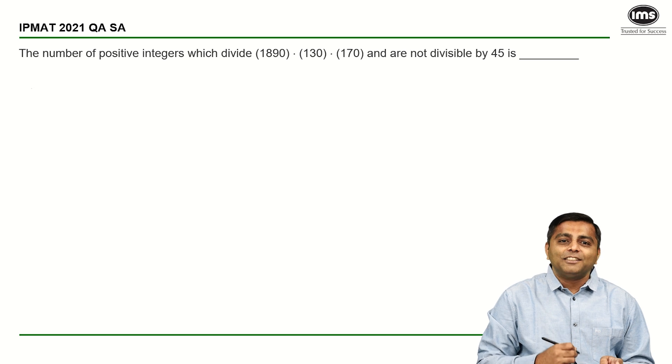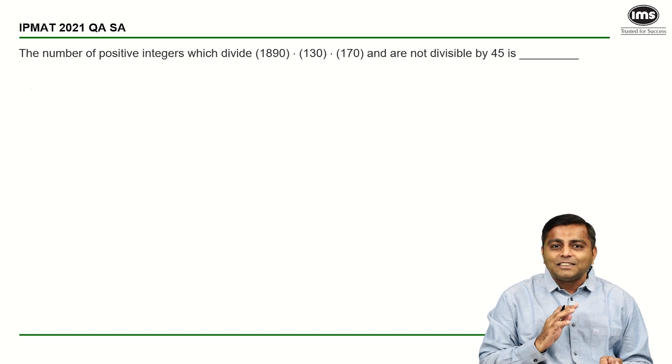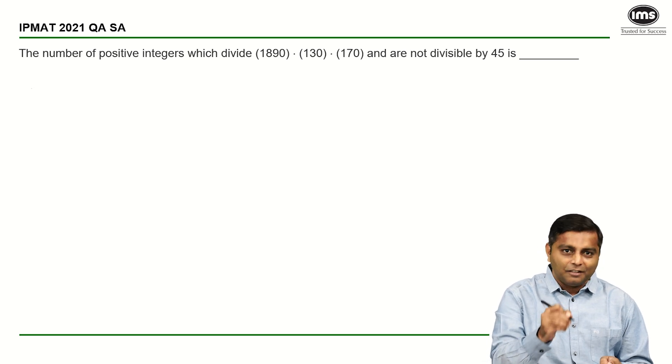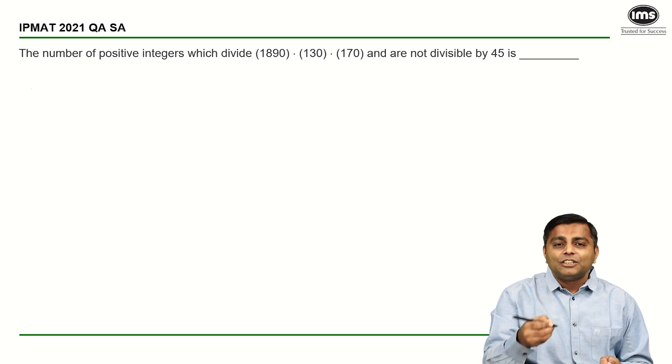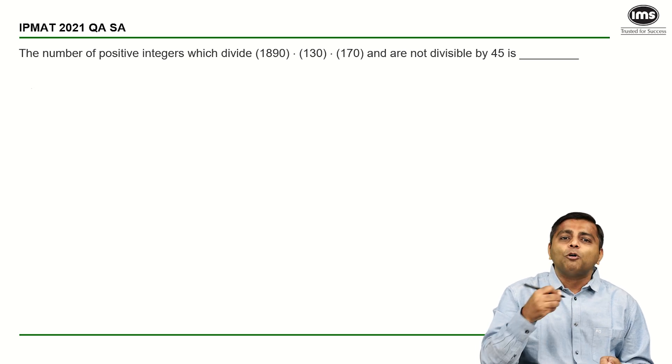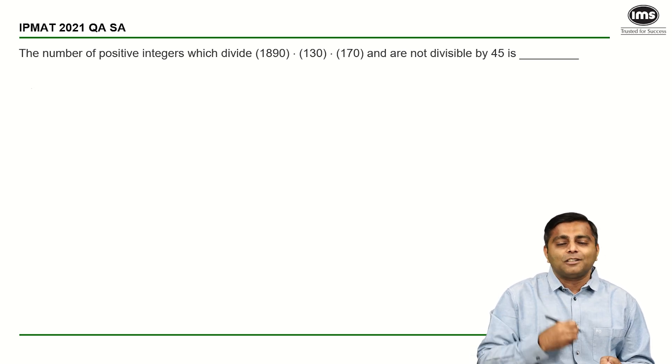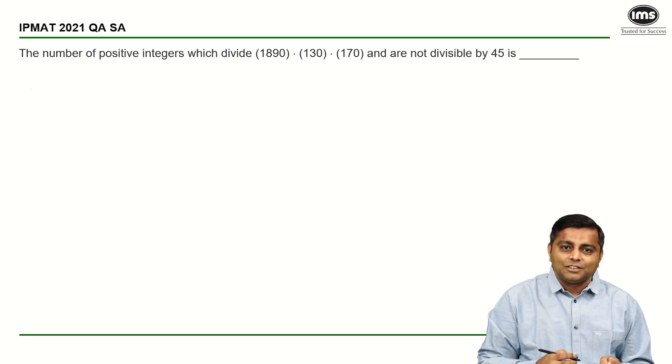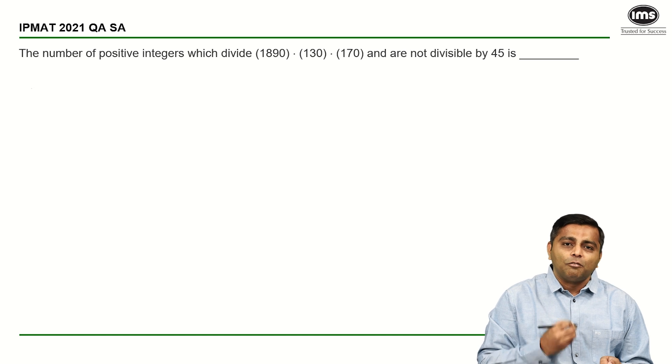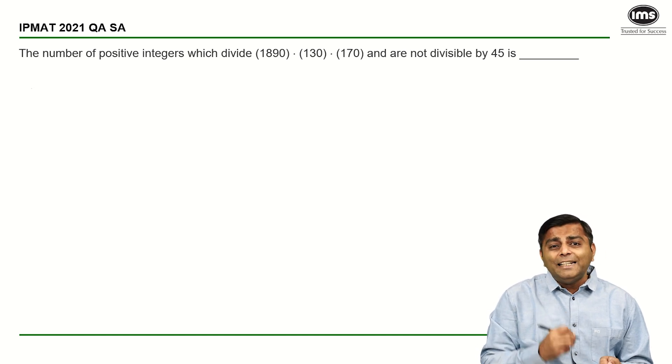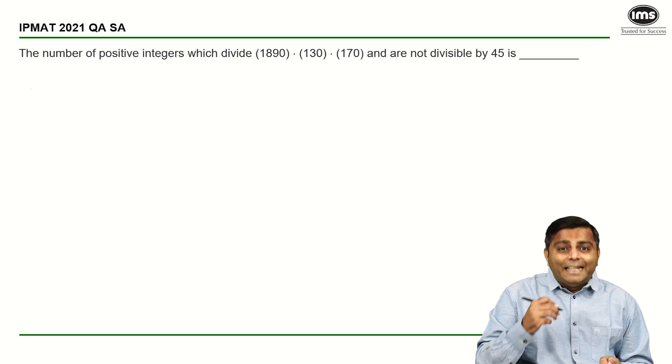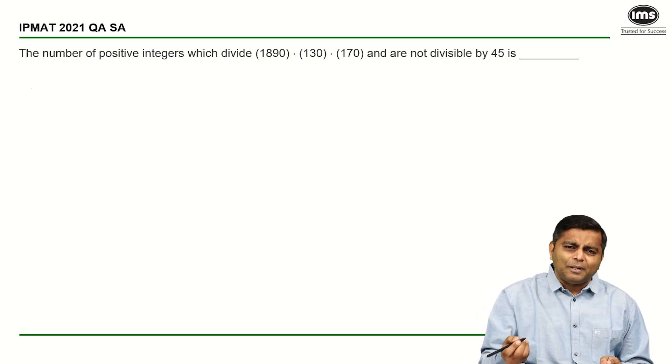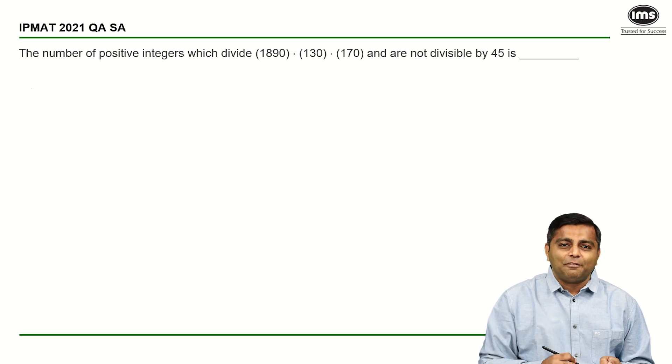Now if you have to find the solution to this question, the simplest possible way is to find all the integers which will divide the given number, subtract the integers which are multiples of 45 and therefore you will end up with integers which are not multiples of 45. In the question they use the word integers, but you know that actually it is a question on number of factors. So the first thing that you do is find the number of factors of this given number, then find the number of factors which are multiples of 45 within that and subtract and you are ready with your answer. So that is the way that we are going to go ahead.